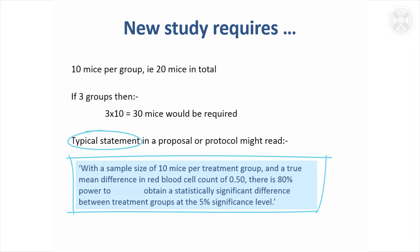You might also want to justify, if you want to give more details, say where the variability came from, where you got that estimate from. You can adapt a sentence a bit like that to suit most situations when you've done a sample size calculation.